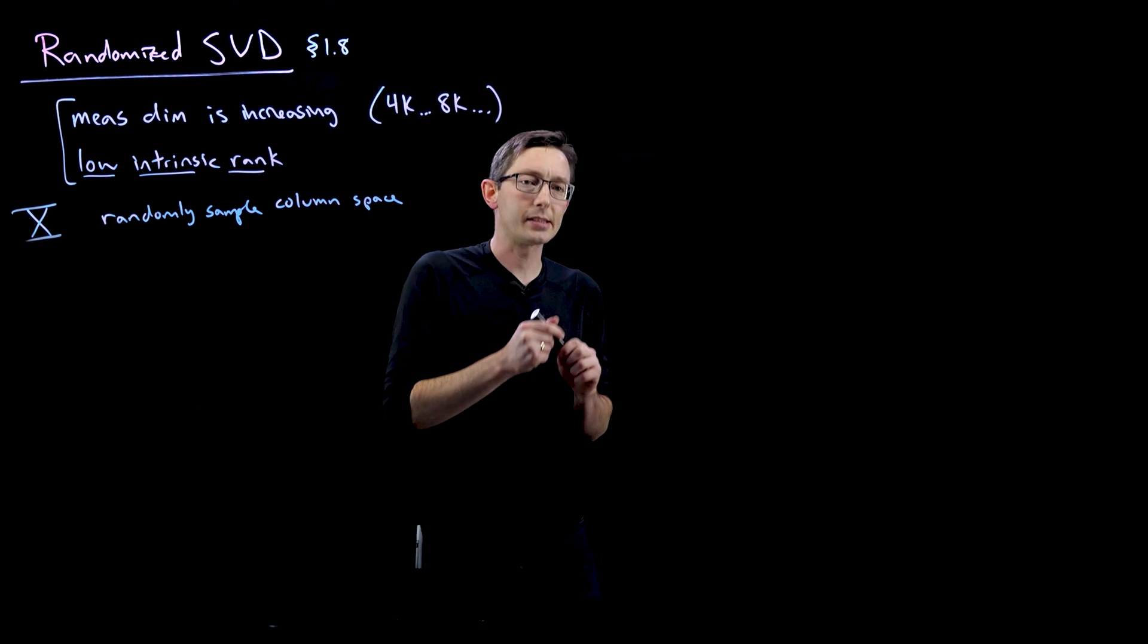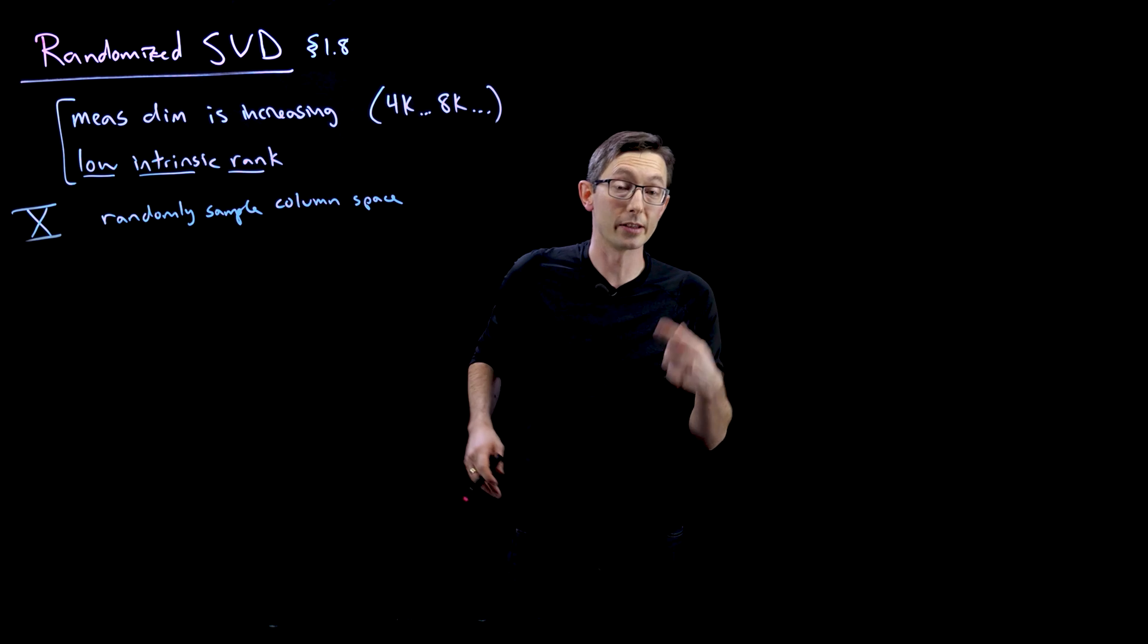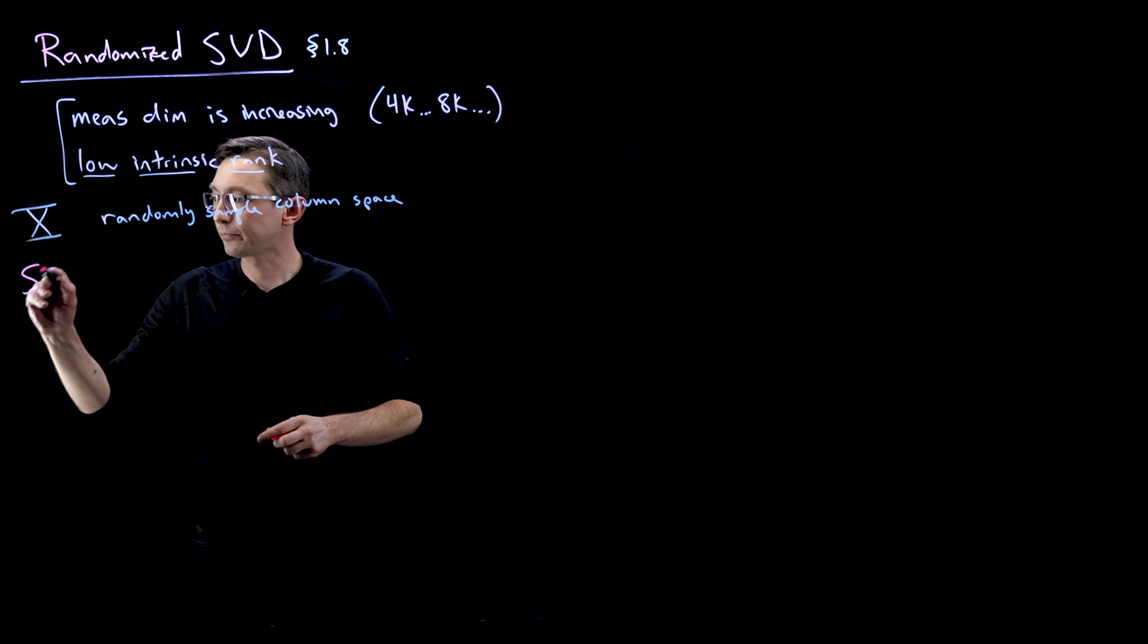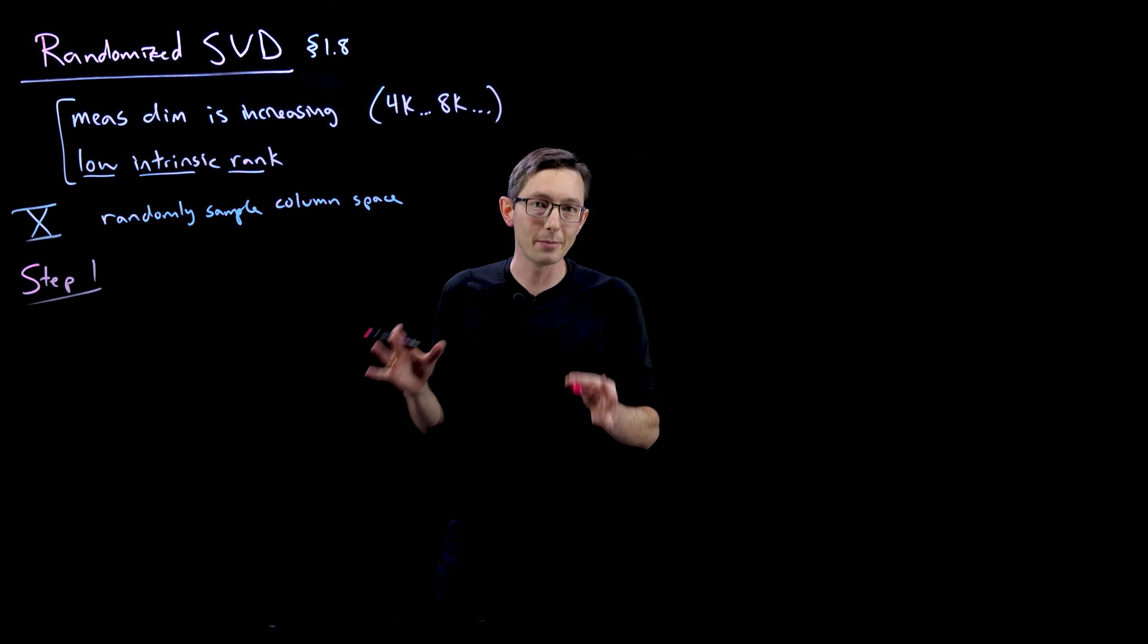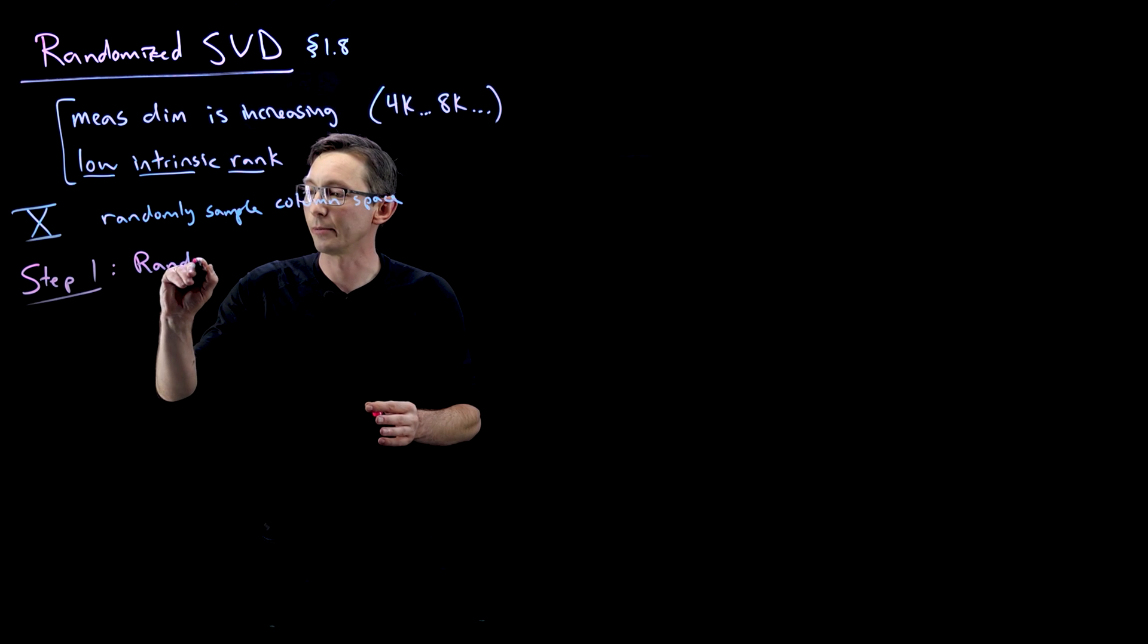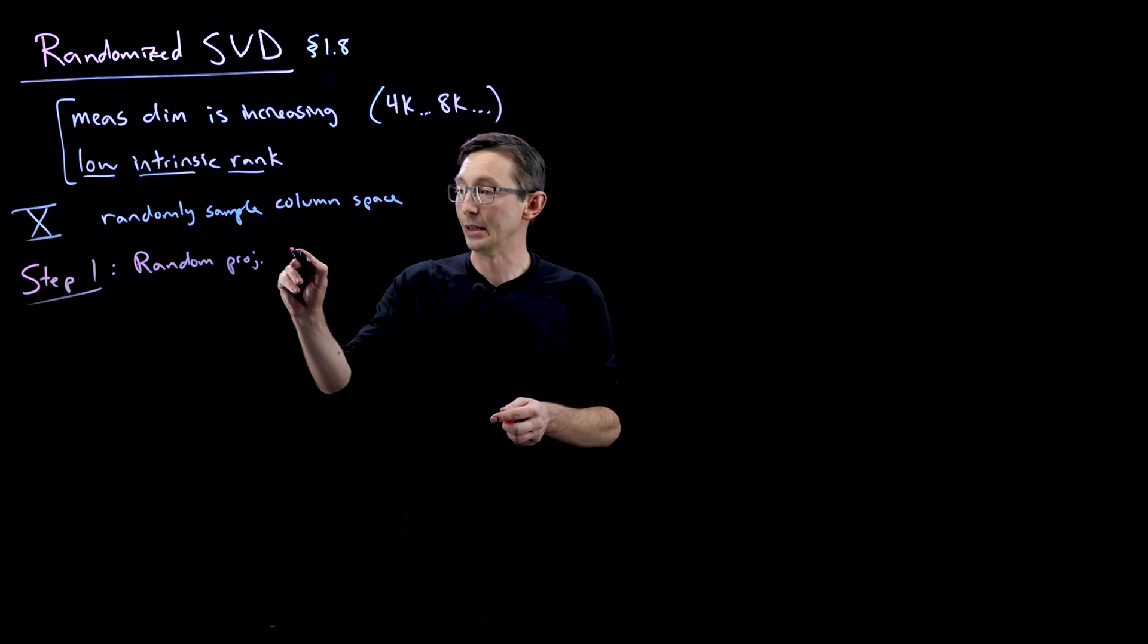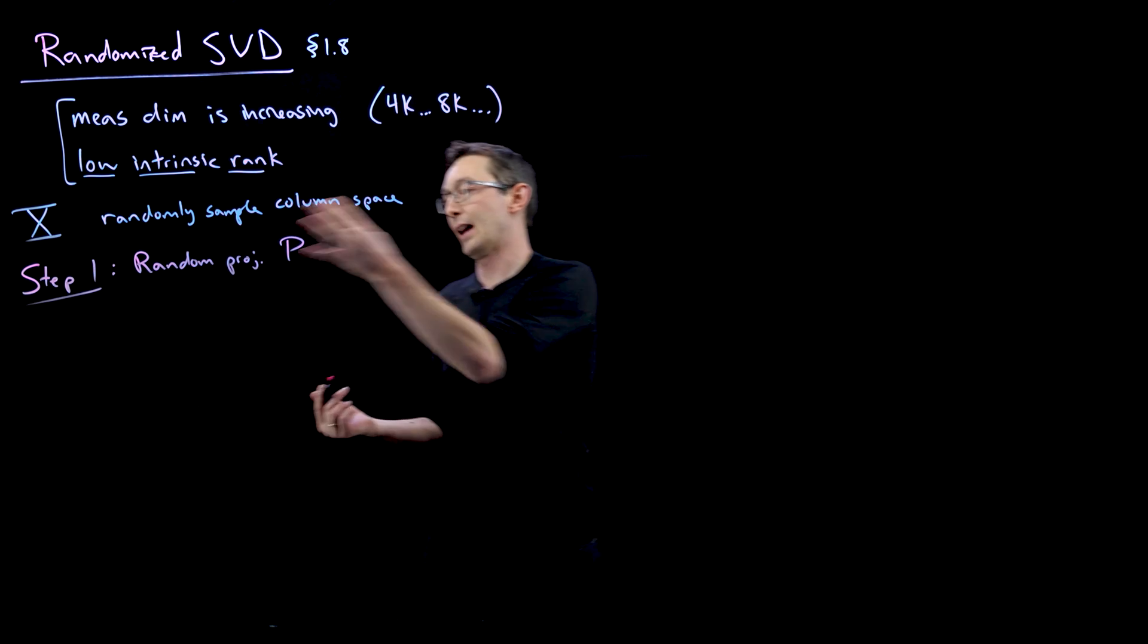So step one, there's kind of two steps to this procedure of computing this randomized SVD. Step one, we're going to compute a random projection matrix P. So we're going to take a random projection. And it really is important that this is a random matrix P that we can multiply on the column space of X.